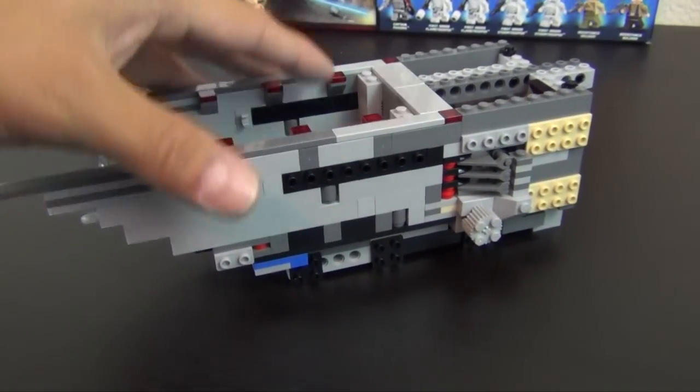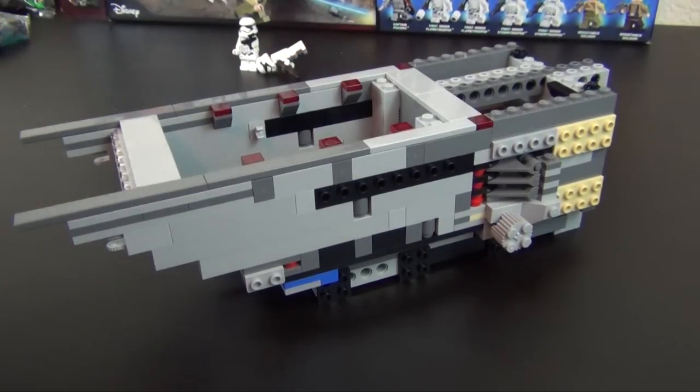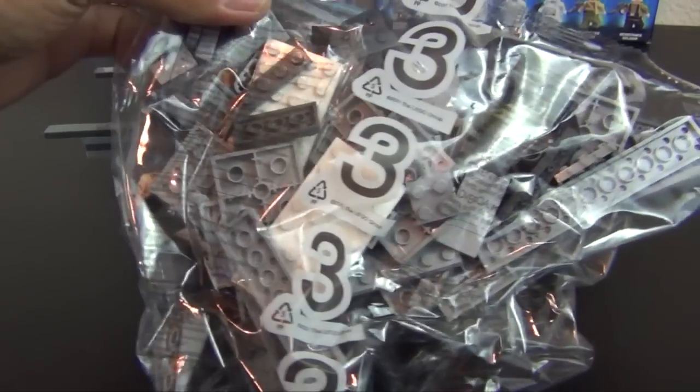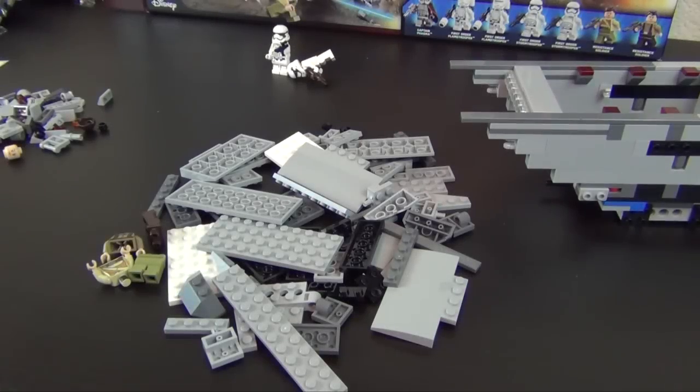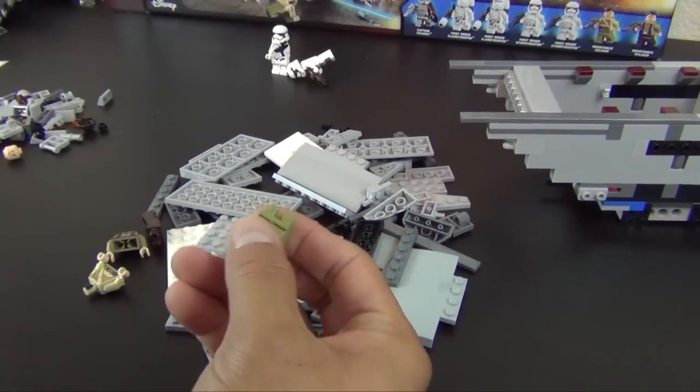Alright, so that completes bag number two. We're going to move on to our third bag right now. Okay, we have all the parts dumped out and we do have our next two minifigures. These are going to be the resistance soldiers.